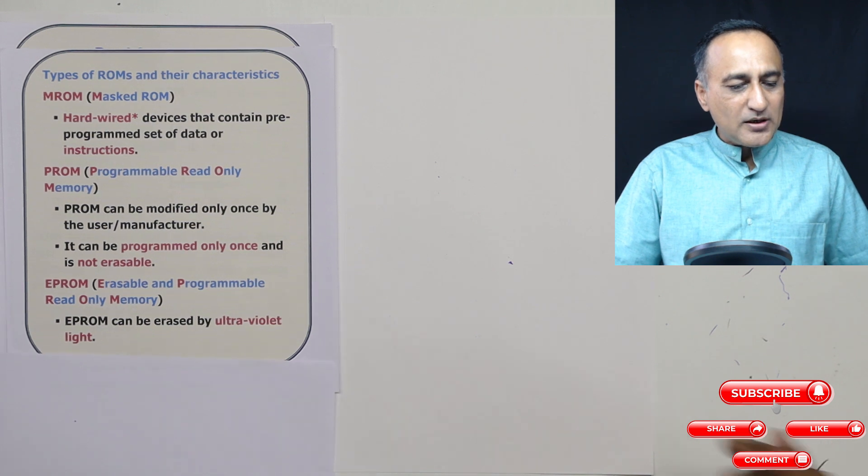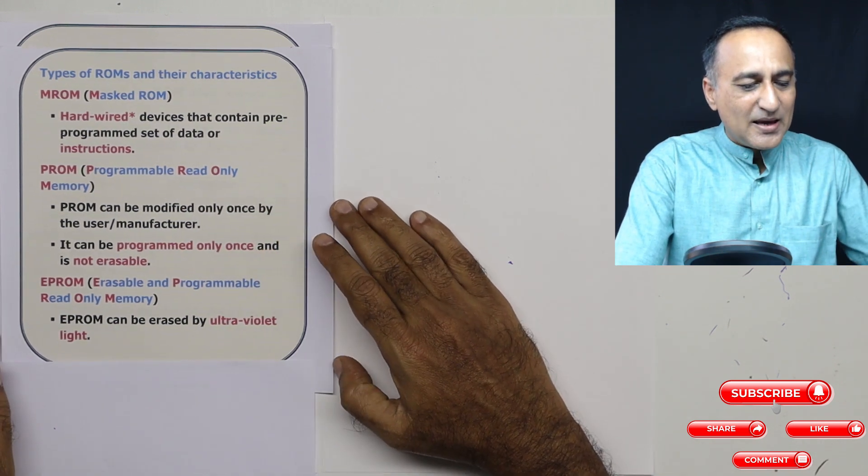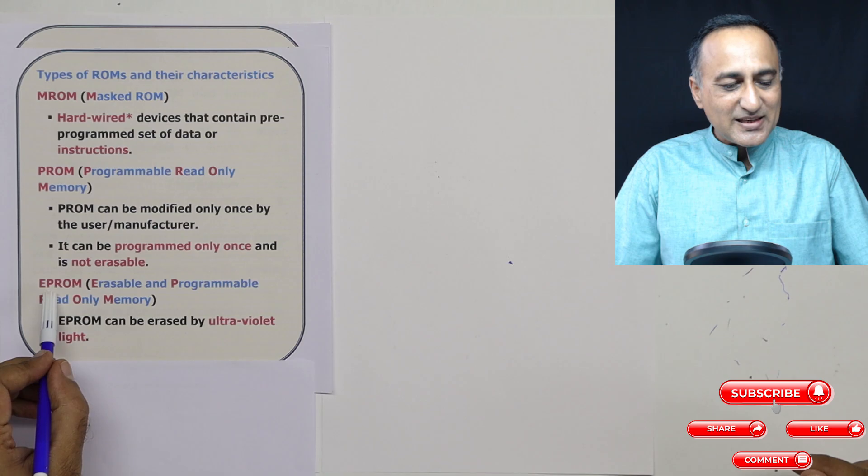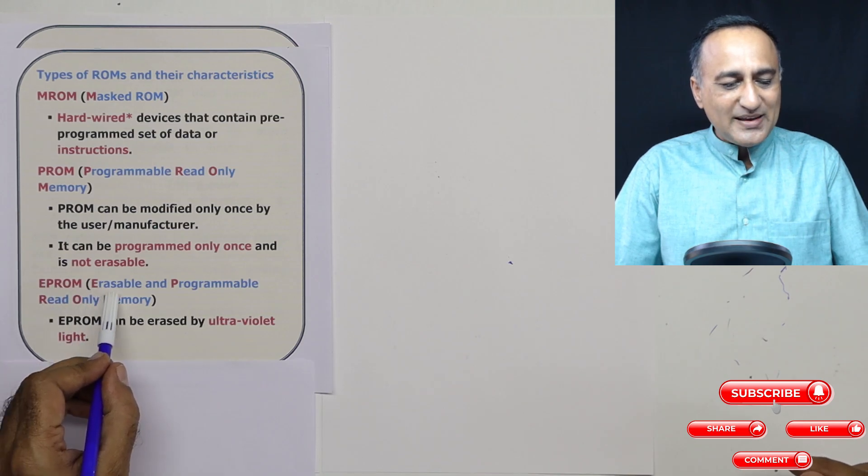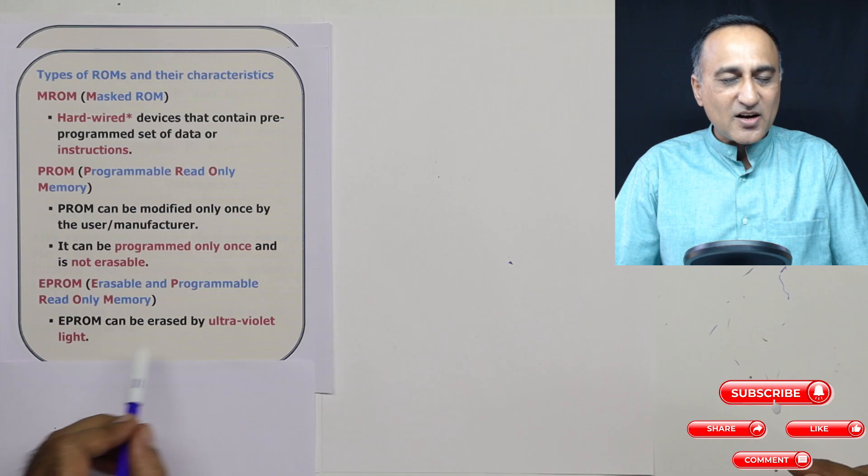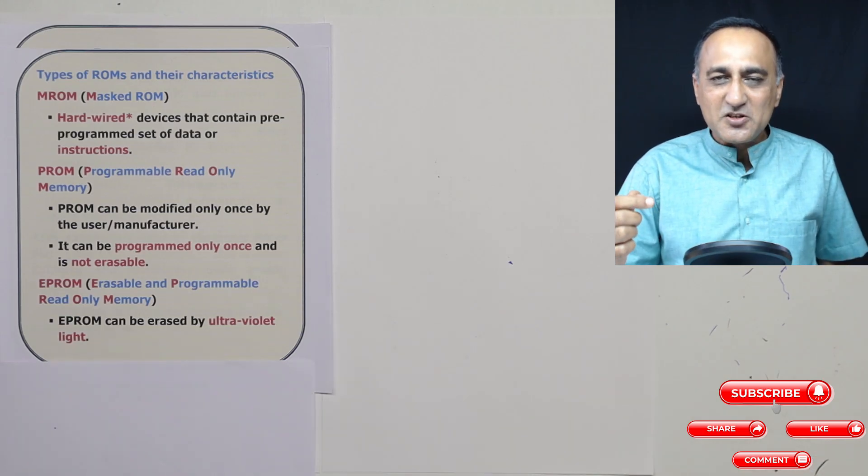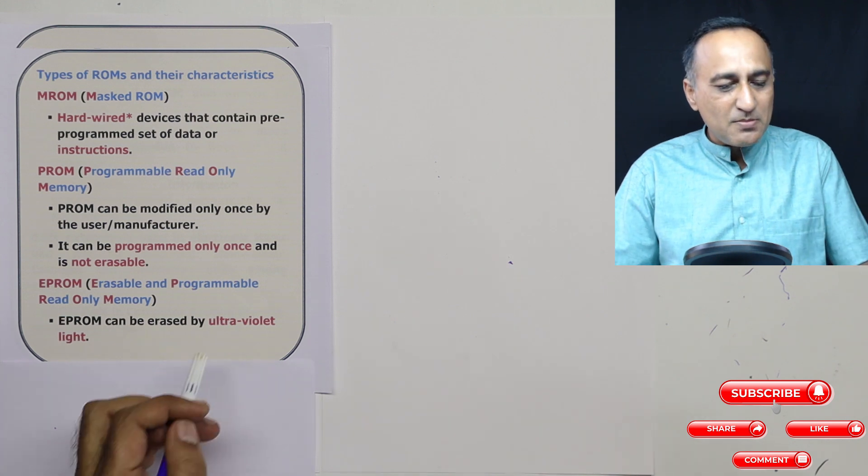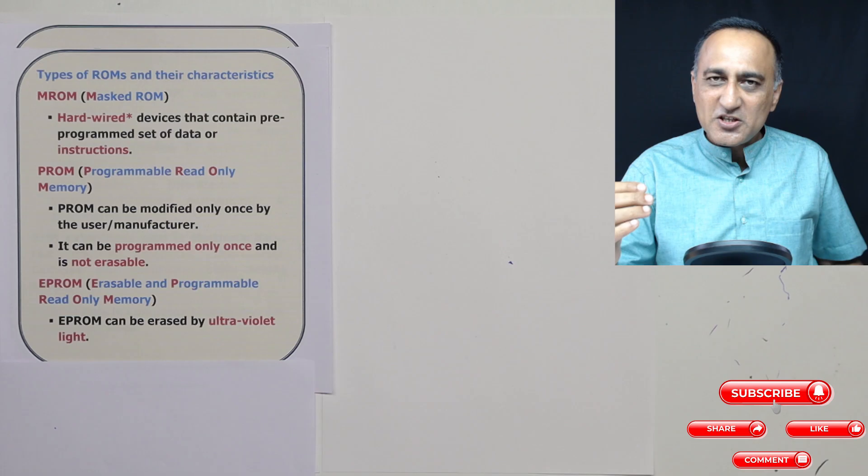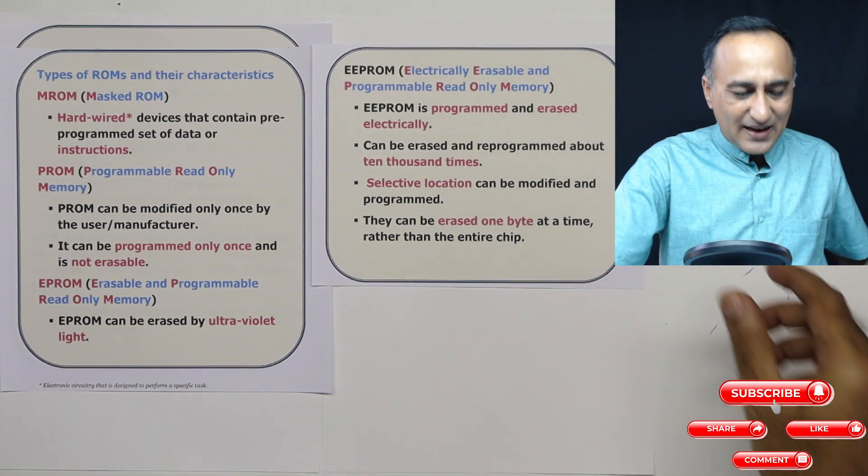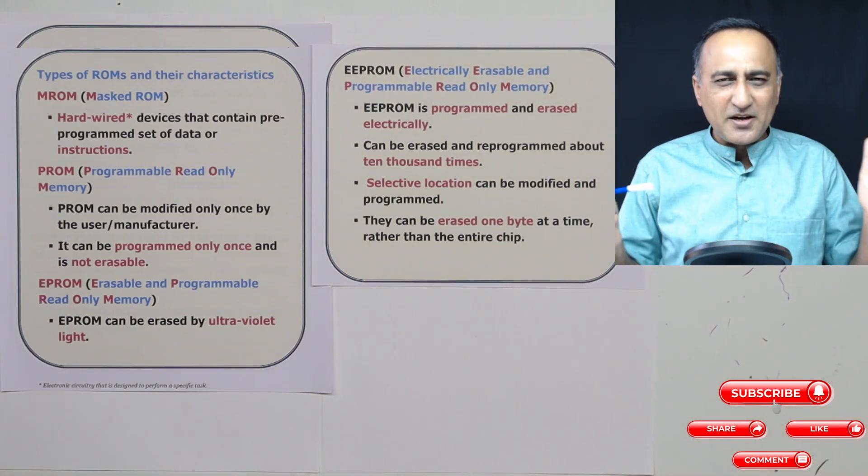Now I'm going to talk about another class of memories called memories which can be programmed multiple times. The first of that type is called EPROM. EPROM stands for erasable and programmable read only memory. Such a memory can be erased using ultraviolet light. That means the contents of that memory can be changed, the data or instructions. Basically what is one and zero: presence of light may indicate one, presence of no light may indicate zero. So using ultraviolet light, we can change the content of that particular thing.